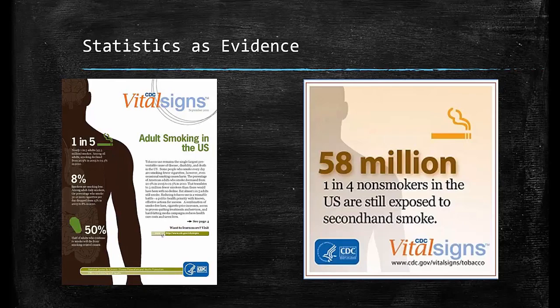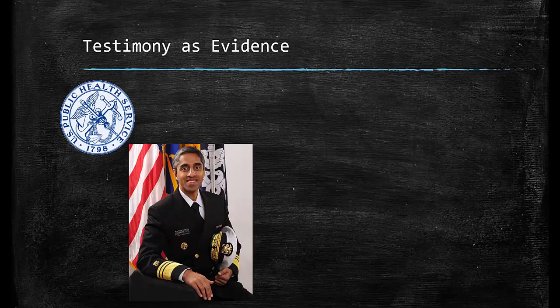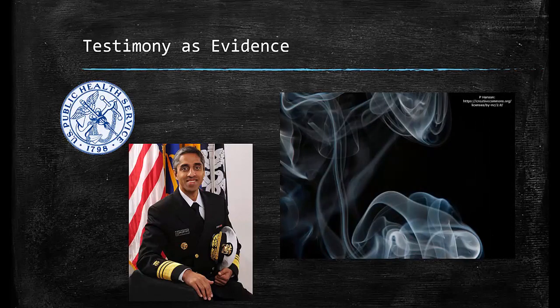Now let's carry the argument about smoking over to the discussion about testimony. Testimony usually comes from experts in the field or someone with first-hand experience, such as an eyewitness to an event. For example, we're going to cite the U.S. Surgeon General's report to discuss the hazards of smoking. Second-hand smoke contains a number of poisonous gases and chemicals including hydrogen cyanide, carbon monoxide found in car exhaust, and butane used in lighter fluid.